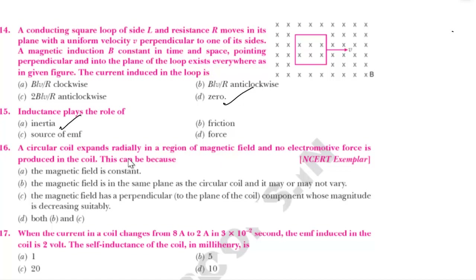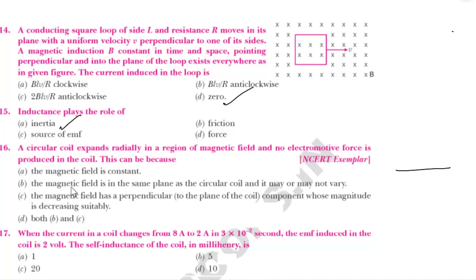Next question: A circular coil expands radially in a region of magnetic field and no EMF is produced in the coil. What is the reason? When the circular coil is expanding radially in a magnetic field, the magnetic field and the circular coil will either be in phase or the field is in the same plane as the coil. The magnetic field is in the same plane as the circular coil — it may or may not vary.